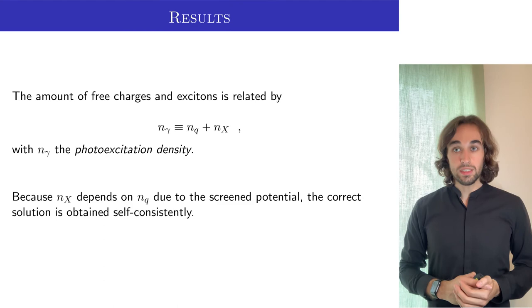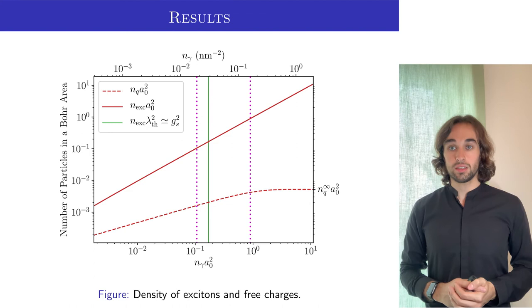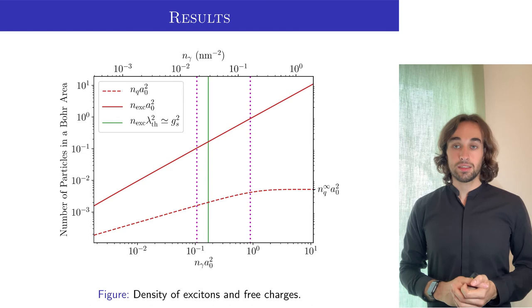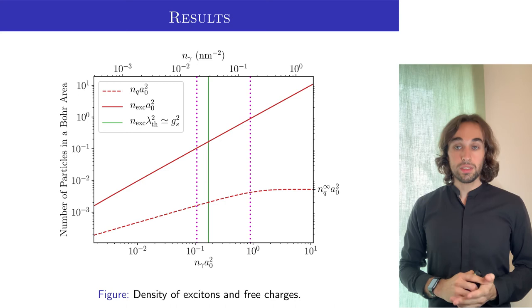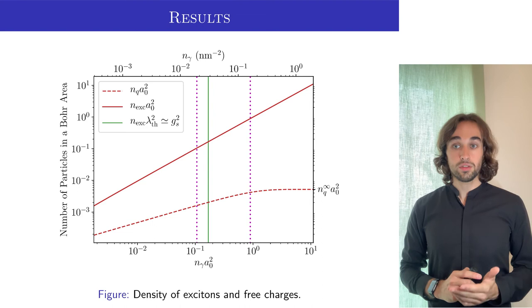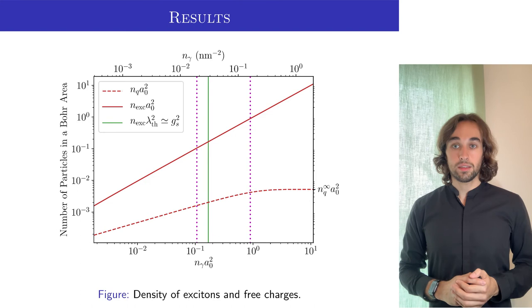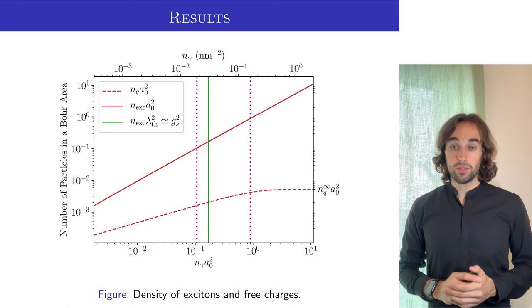With this, we can then determine the correct proportion of free charges and excitons in the material, as a function of the photoexcitation density. In this figure, you can see the photoexcitation density in the x-axis, and the density of each species in the y-axis. Notice that it is logarithmic, which means that there are many, many more excitons, which is represented by the solid line, as compared to the free charges, the dashed line. Furthermore, you can see that as we keep increasing the photoexcitation density, at some point, the density of free charges saturates to some value, while the density of excitons just keeps increasing.